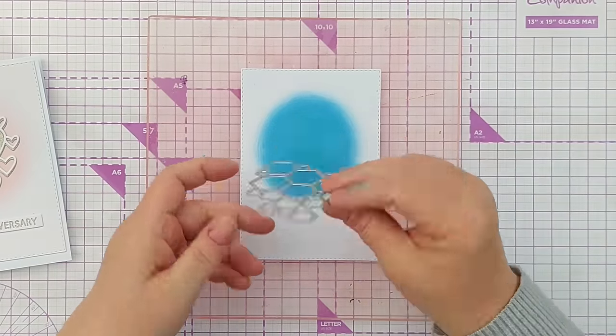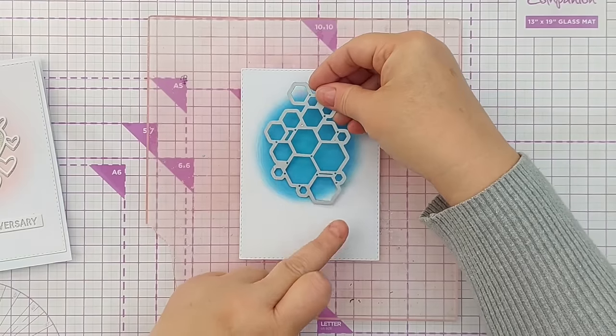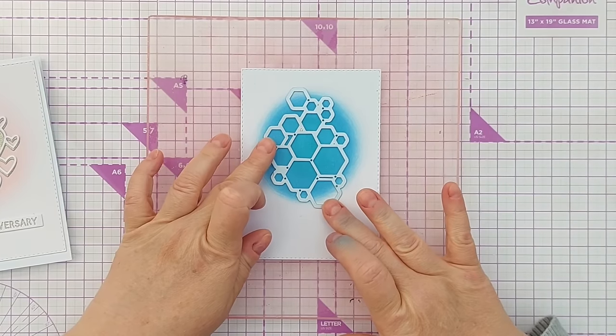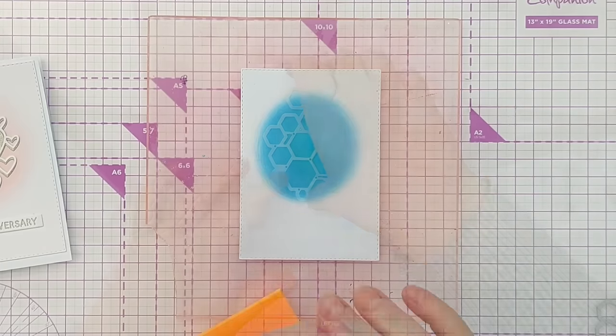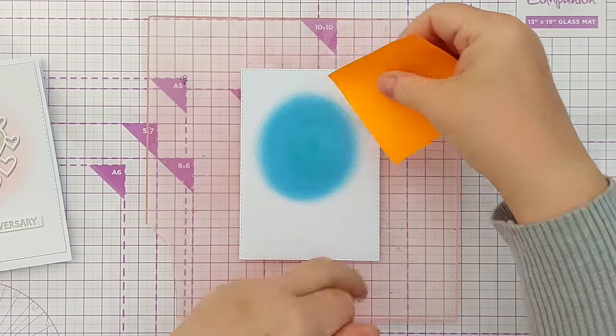So here's my nesting die. I'm not sure which way up I'm going to put it yet. Maybe that way. And I think that will sit nicely on there.